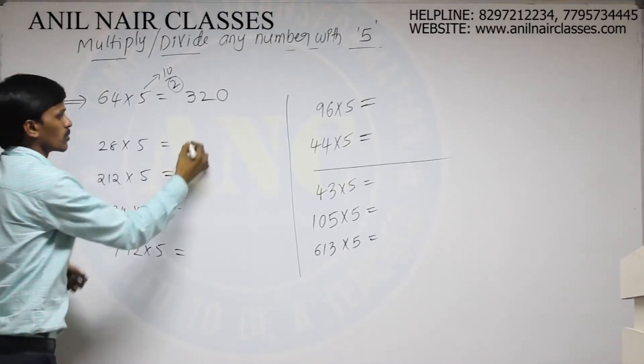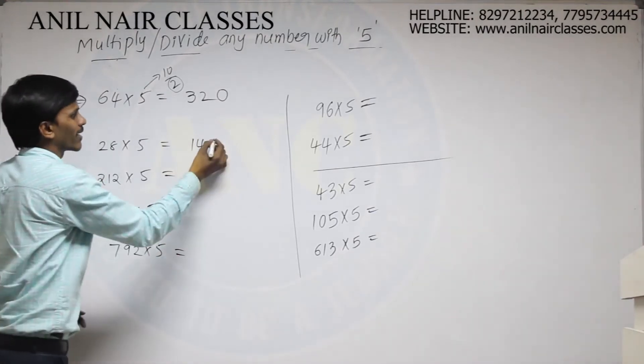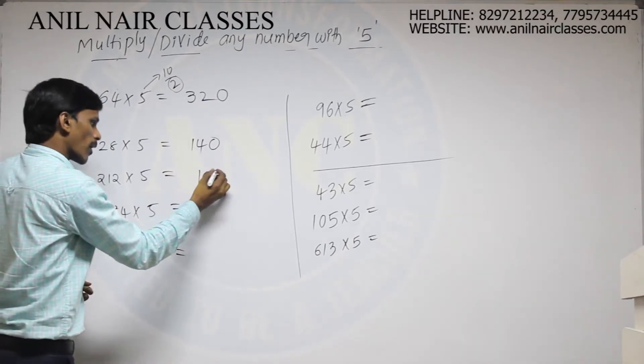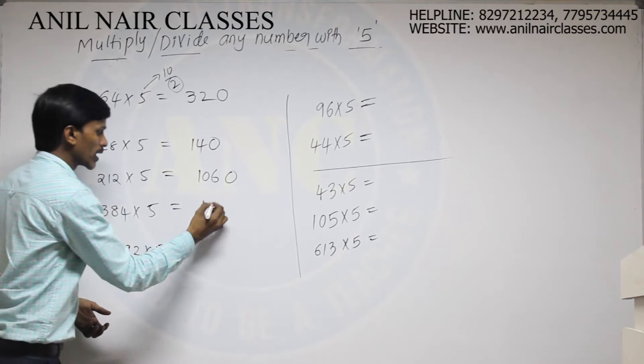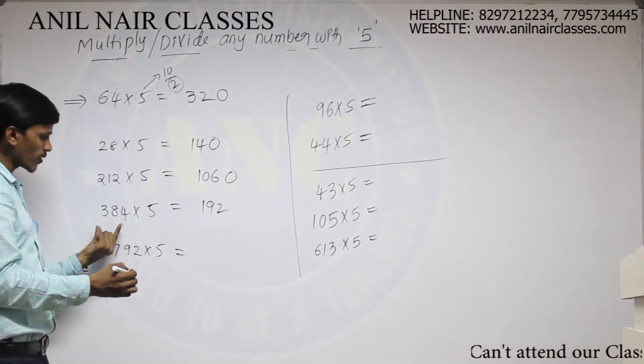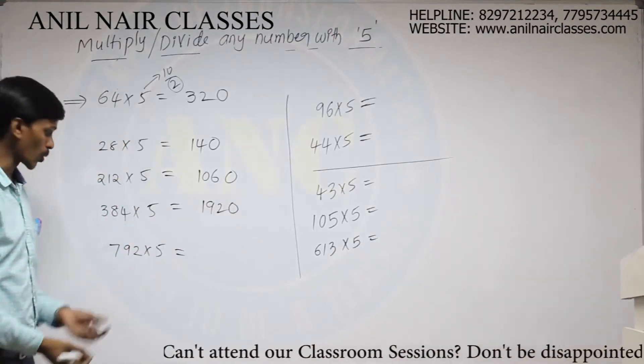Similarly, divide 28 by 2. It will be 14. Add additional 0. 212, it will be 106. Add additional 0. 384, it will be 192. Half of this will be 192. Add additional 0.